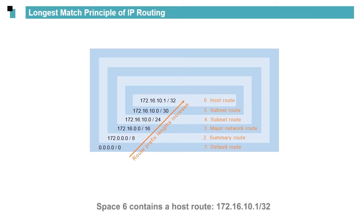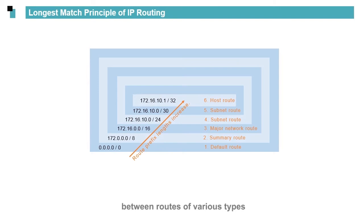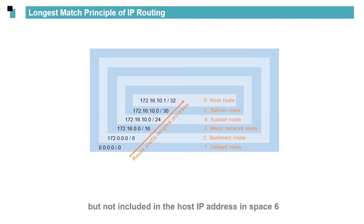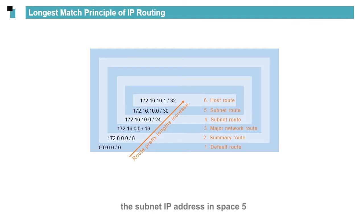Space 6 contains a host route 172.16.10.1/32. From this figure, we can learn the inclusion relationship between routes of various types. From the outer space to the inner space, route prefix lengths increase. The IP address 172.16.10.2 is included in the subnet IP address in space 5 but not included in the host IP address in space 6. In addition, spaces 1, 2, 3, and 4 all include the subnet IP address in space 5.